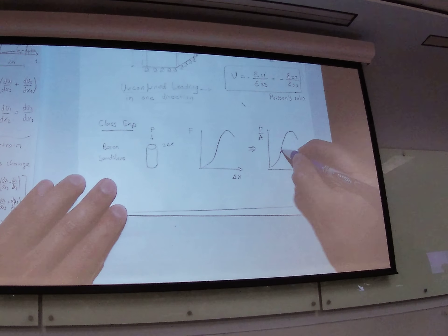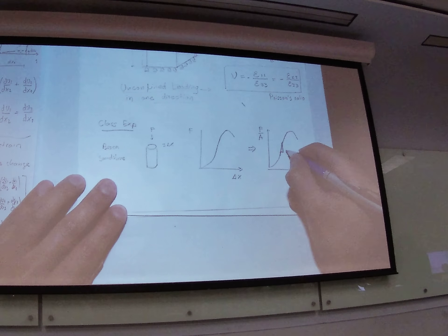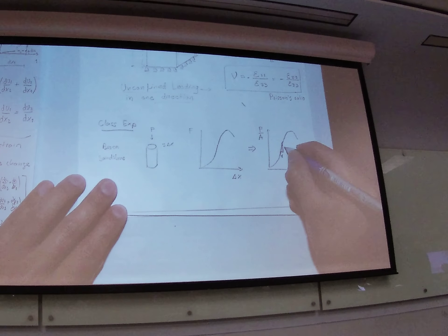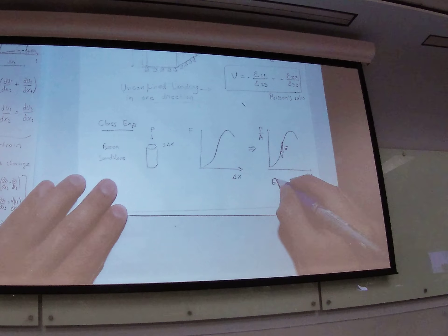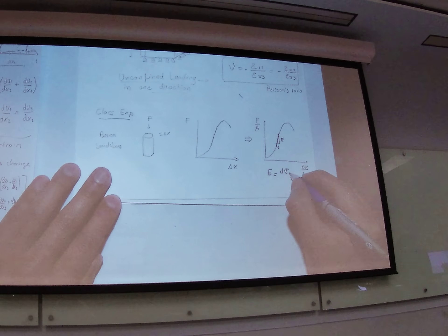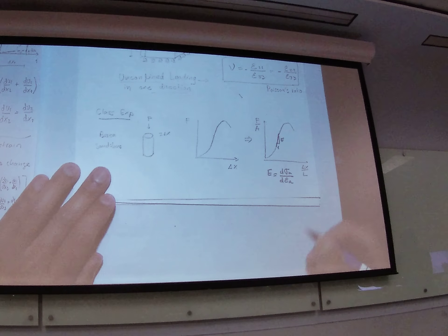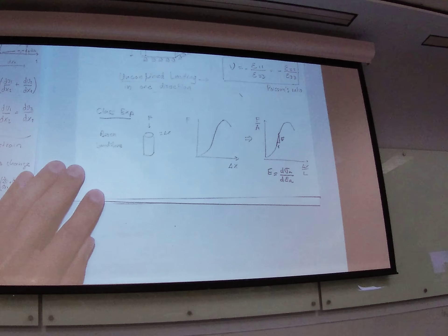I'd like you to tell me, in that region, what is the Young's modulus. The Young's modulus is going to be — if this is equal to 1 — the Young's modulus. Young's modulus is going to be the variation of axial stress divided by the variation of axial strain.